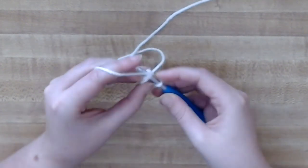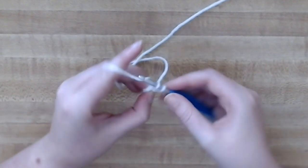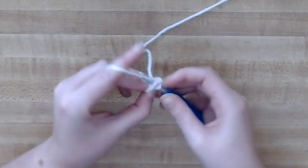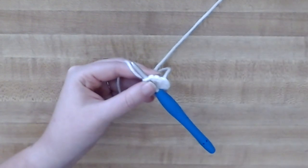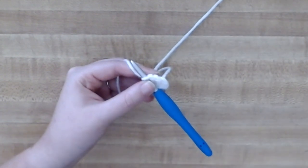Pull your ring closed and now you're going to be working in the round. In the first stitch, increase, so that means put two single crochets into the very first stitch, and then place your stitch marker into the first single crochet that you made. That'll be the start of your round.